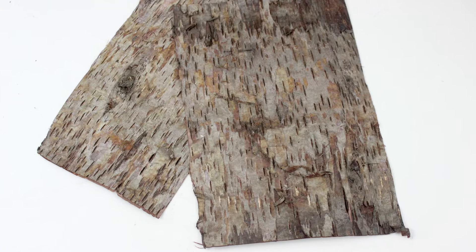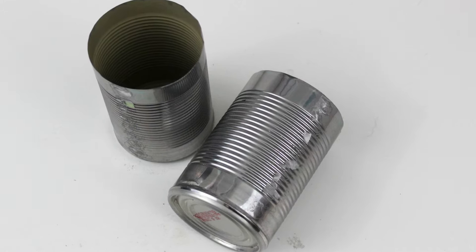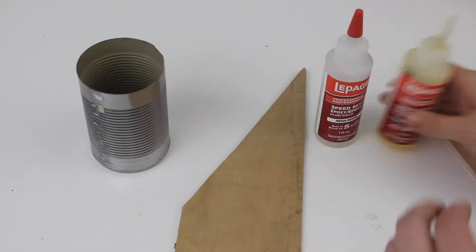There are some links in the description for where you can find birch bark sheets if you don't have your own already. You also need a couple of round tins or vases and a two-part epoxy.